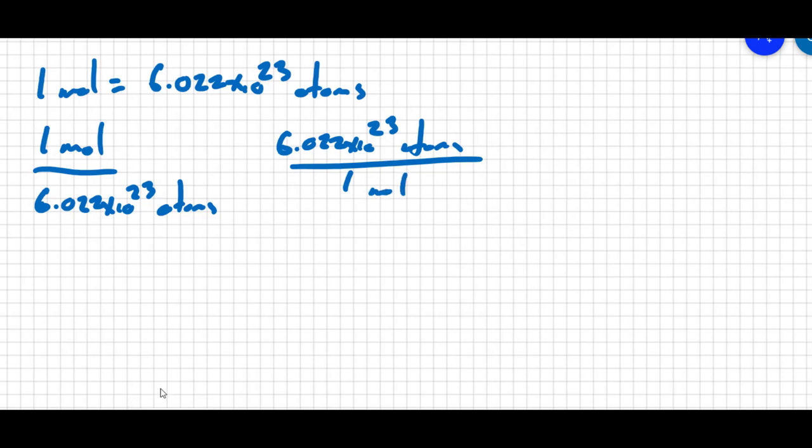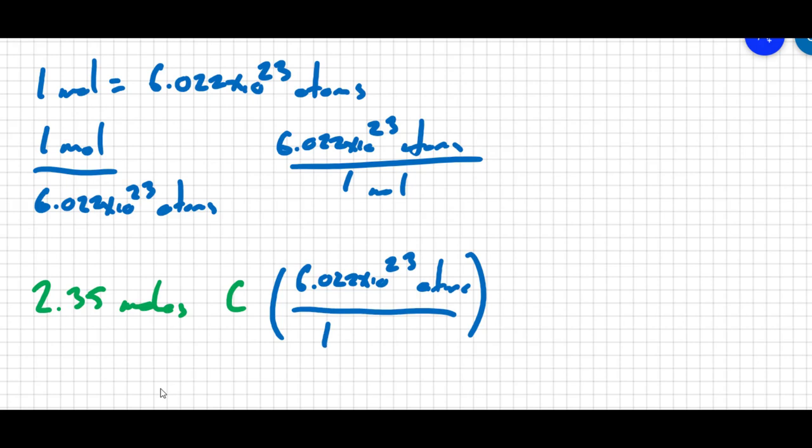In this question, we're given 2.35 moles of carbon and we want to know how many atoms there are. I'm going to choose the conversion factor that cancels out the moles. So I'm going to put 6.022 times 10 to the 23rd atoms all over one mole.